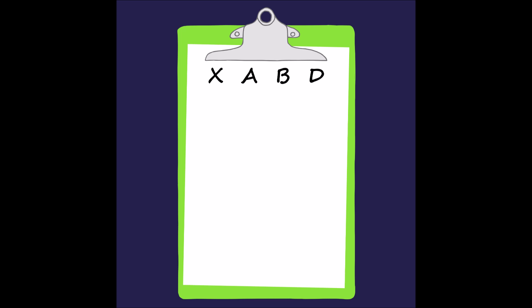Hi, I'm Laurel, and in this problem we will be discretizing an information system using discernibility formulas. Let's work this problem together. This system has tuples labeled X, two attributes labeled A and B, and a decision feature D.